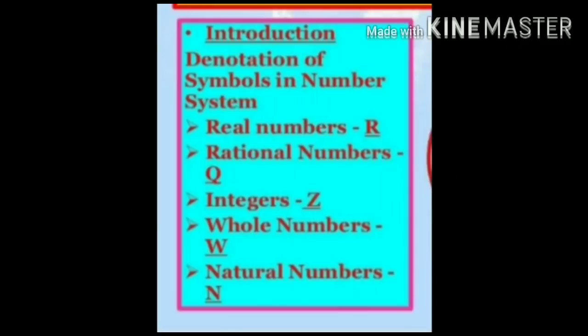Now children, let's see the denotation of symbols in the number system. Real number is denoted by capital R, rational number denoted by Q, integers by Z, whole numbers by W, and natural numbers by N.